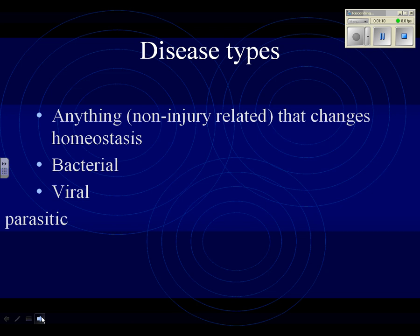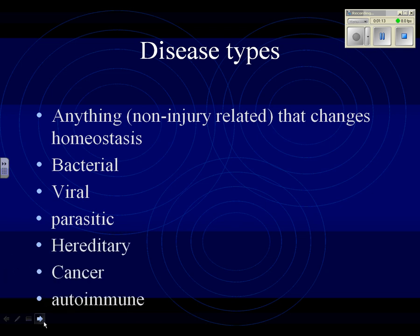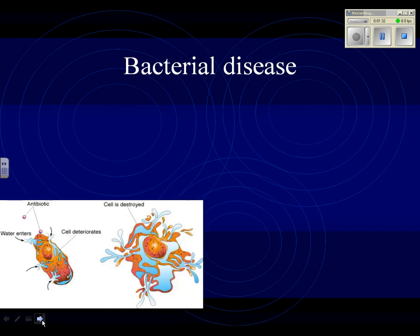There are basically six types of diseases that we can talk about, and here they all are: bacterial disease, viral disease, parasitic disease, hereditary disease, cancer, and autoimmune diseases. Let's talk about each of them.